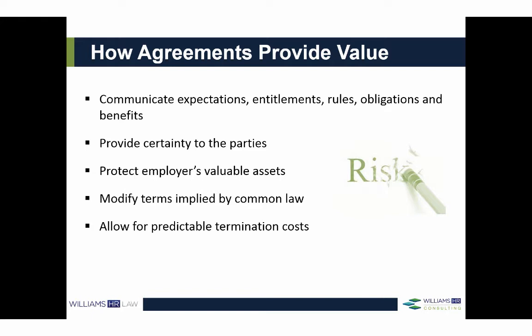The most significant aspect of common law terms that employment agreements can modify are termination provisions, which allow for predictable termination costs. At common law in Ontario, employees terminated without cause are entitled to reasonable notice, which can be as high as 24 to 30 months of notice or pay in lieu. This is far greater than the Employment Standards Act minimum entitlements. You cannot contract out of ESA minimums, but you can limit the common law entitlement using a well-drafted termination clause.